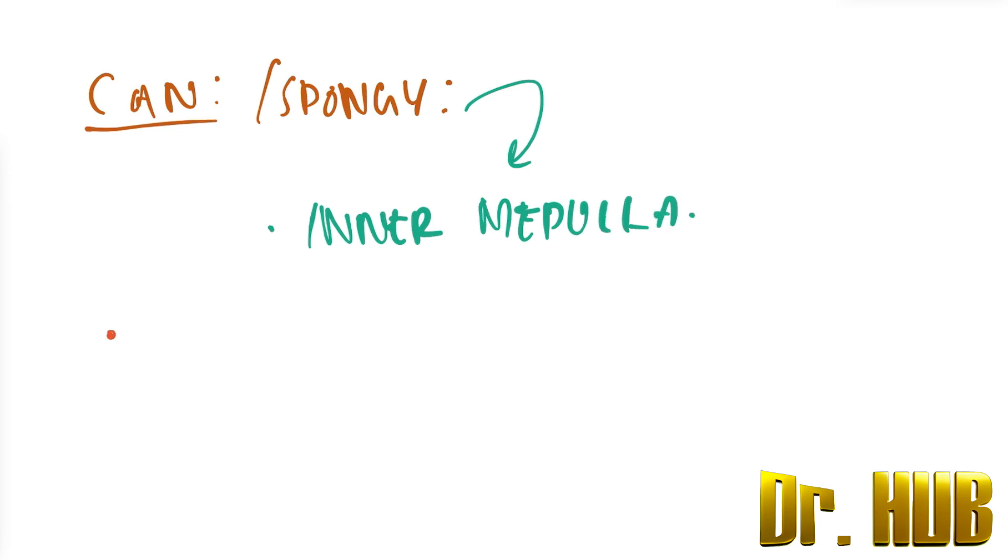What about the lamella? The lamella is arranged in a meshwork, and the Haversian system is absent in cancellous bone.